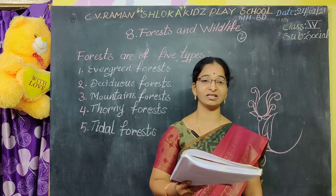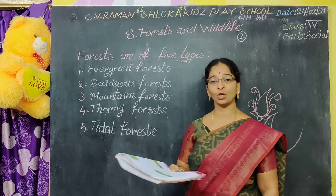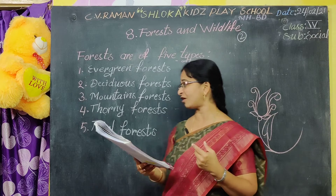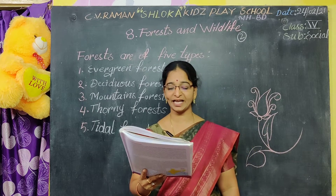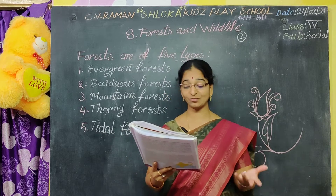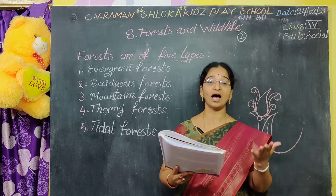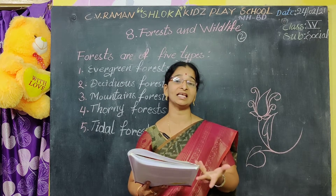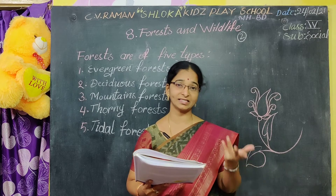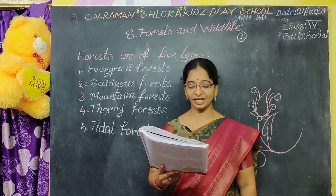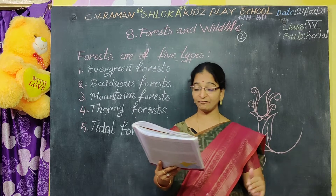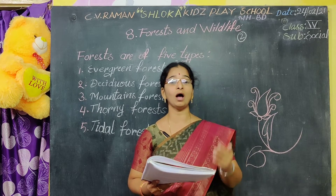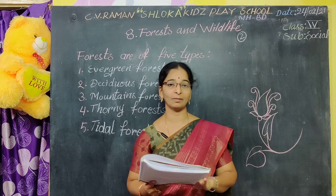Next we will see the tawny forest. The fourth type is tawny forest. These forests are found in areas where rainfall is scarce. These tawny forests are found in places where there is very less rainfall, meaning it is a desert area. The north-western part of the great Indian desert and parts of the Deccan plateau have dry tawny forests.